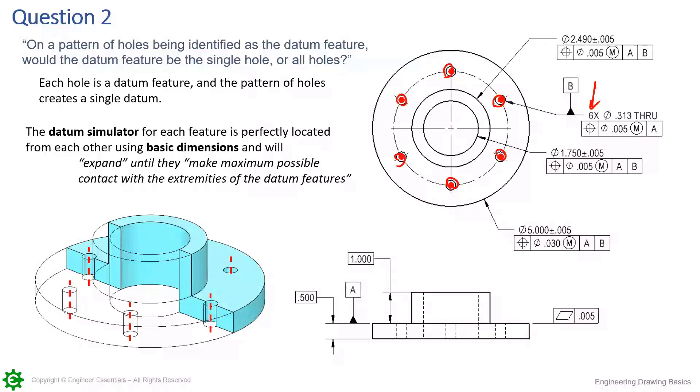If you try and picture the datum simulator, in my opinion that's the best way to try and understand what's getting across here. What sort of fixture, what sort of functional gauge would you use to set up the datum simulation? You're going to make sure to locate that datum simulator at true position.